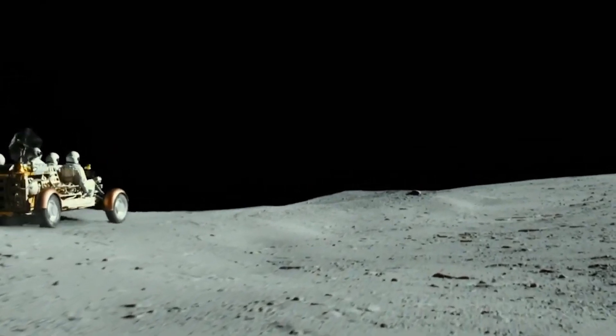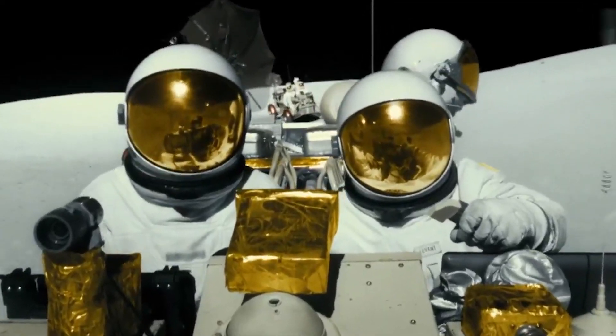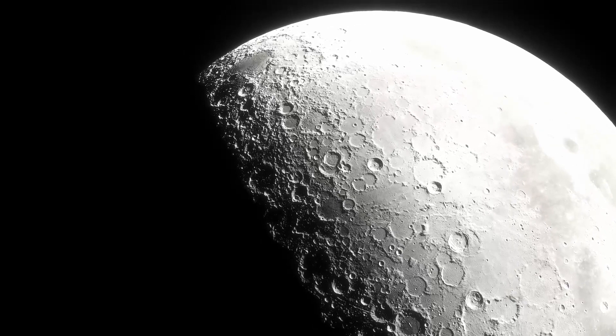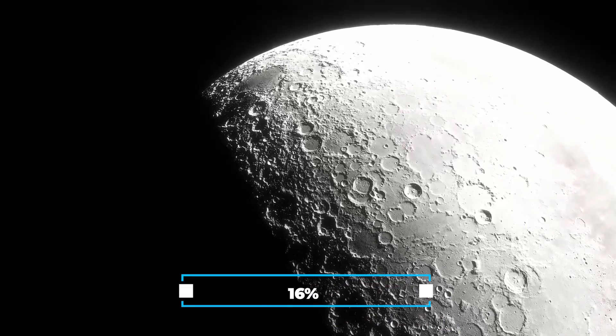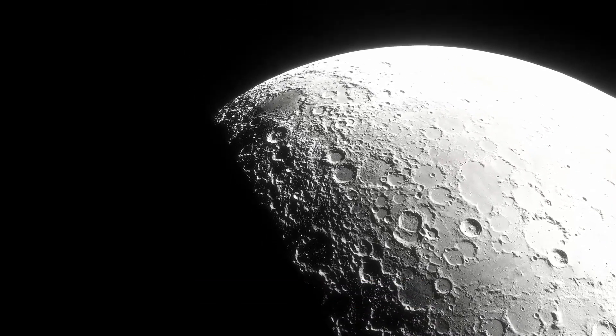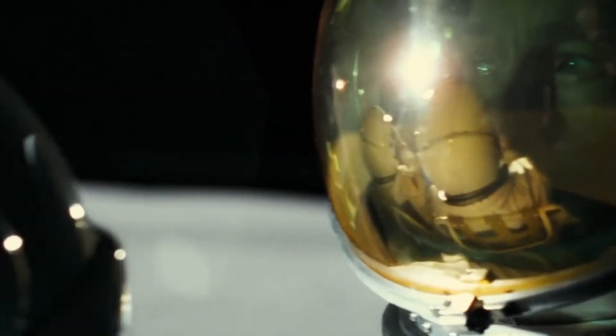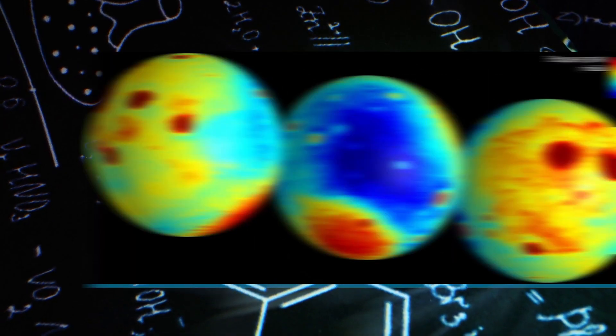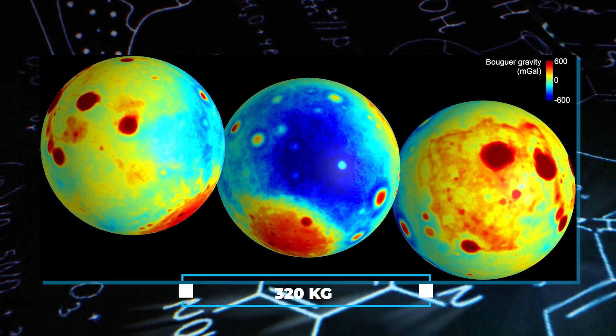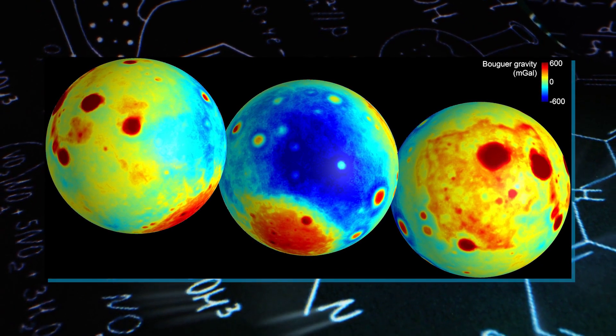Anchoring the tethers to the rim is tricky, especially without astronaut assistance. Fortunately, the moon's weaker gravity, about 16% of Earth's, simplifies this task. Supporting a 2,000 kilograms telescope on the moon feels like handling just 320 kilograms on Earth due to the moon's lower gravity.